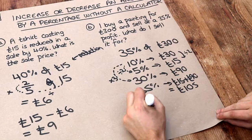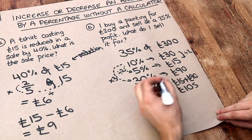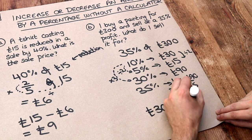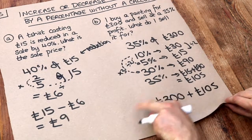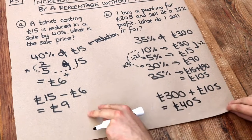What do I sell it for? Well if it was originally £300 and you sold it at £105 profit, that means you're selling it for £105 more. So we add those together, that then gives you £405.